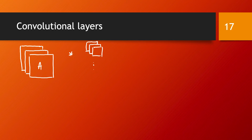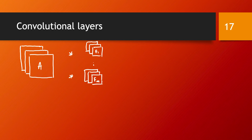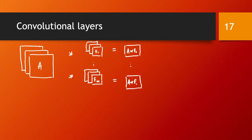The input data is denoted by A, and we have filters F1 through FN, all with the same number of channels. In the result, we will have for each convolution a matrix which is the convolution between A and F1, and the same kind of computation is done separately for each filter. The result is of the same size for all of them, and then the idea is that you add a bias, similar to what we had in the fully connected layer.